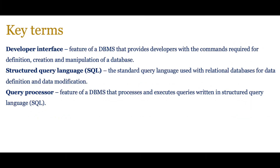Do pause the video and jot these down. The next set of key terms involve the actual parts of a database management system. You've got a developer interface, which is a feature of the DBMS that provides developers with commands required for definition, creation, and manipulation of a database. You've got structured query language, SQL, which is a standard query language used within relational databases for data definition and data modification. And then there's a query processor, which is a feature of a DBMS that processes and executes queries written in SQL.